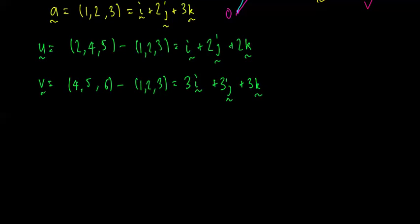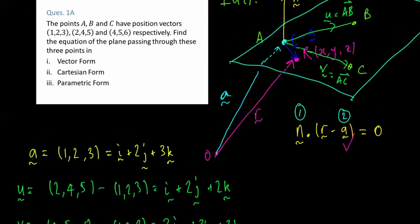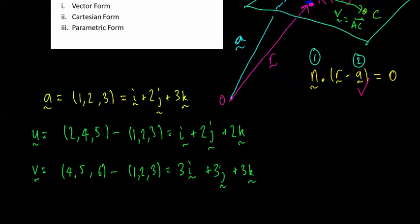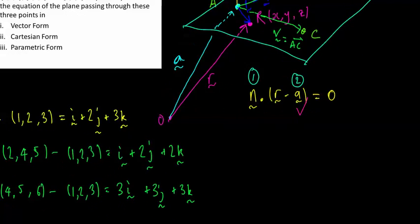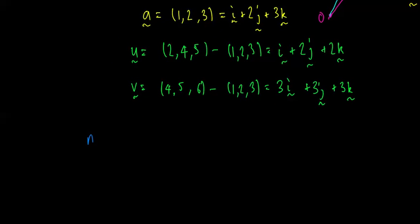Okay. So, that's our two vectors, u and v. They're both on the plane. So, to find the normal, we just need to take the cross product of these. So, the normal vector is equal to, u crossed with v, which is, i, j, k. So, normal way we do cross product. 1, 2, 2. And 3, 3, 3.